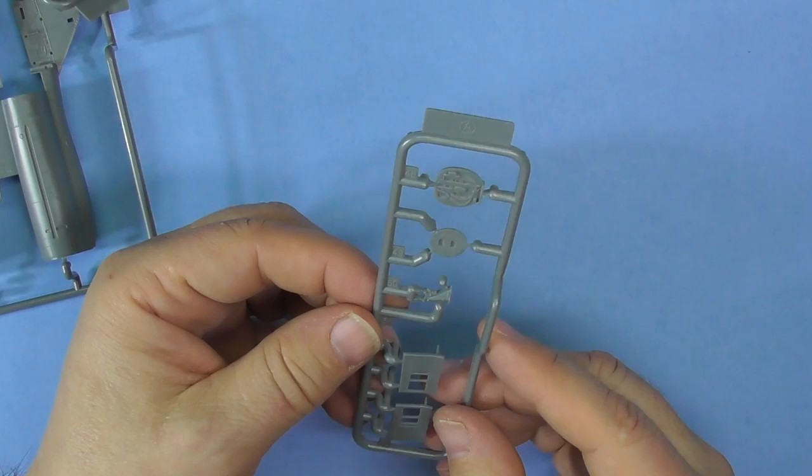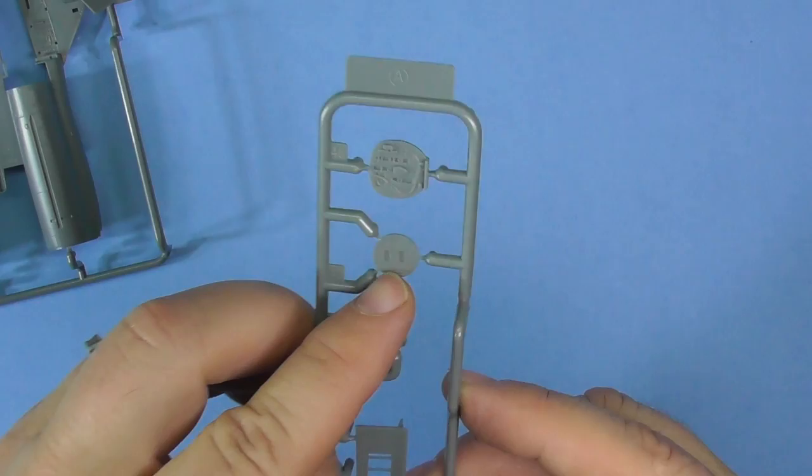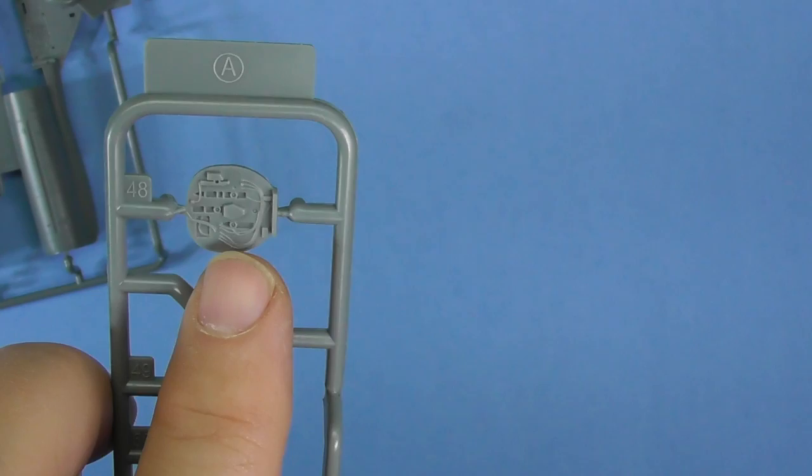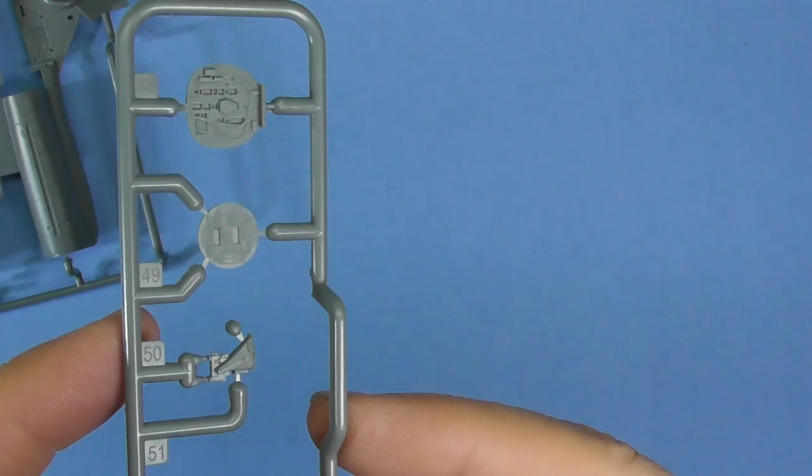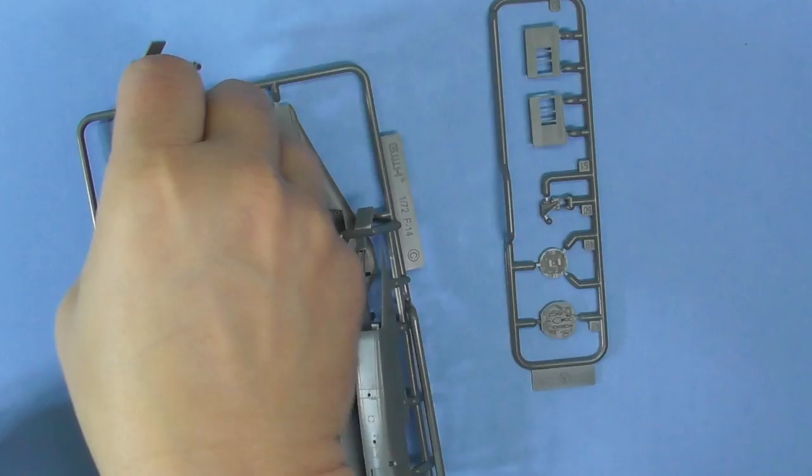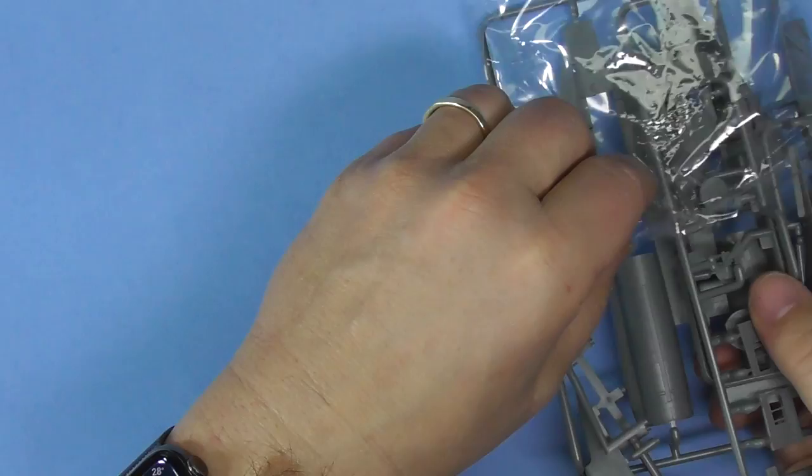The detail right there, there's an ejector pin mark in both of them but I don't think you'll see them. But that detail there on this side and on this side all the way around. Bulkhead detail, really nice. Not sure, maybe the heads up display or maybe it's part of the radar. Because this has got to be the part of the radar.